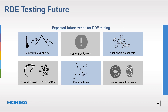Whilst never likely to be part of an on-road RDE test, the EU is considering introducing legislation to monitor and restrict the emissions of particles from vehicle braking systems, for which a test and measurement system is already available from Horiba.